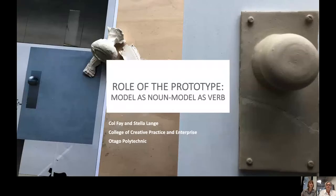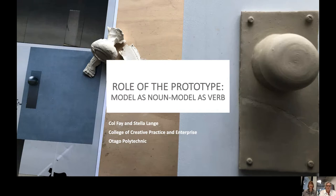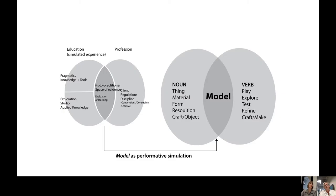So we're going to talk about the role of prototype and this came out of a long series of conversations that we've had. What we realised is that architectural education emulates or replicates professional practice in the classroom, and this happens in two ways: one through learning about topics and one through experimental design.